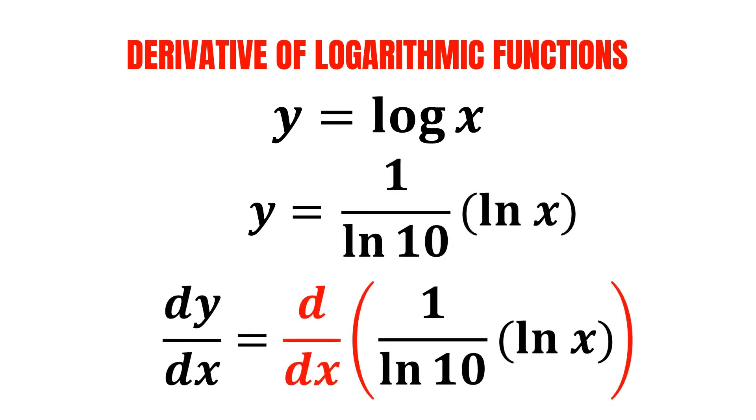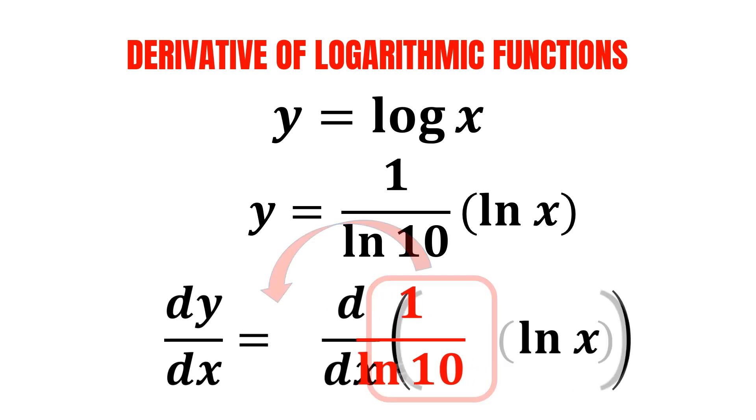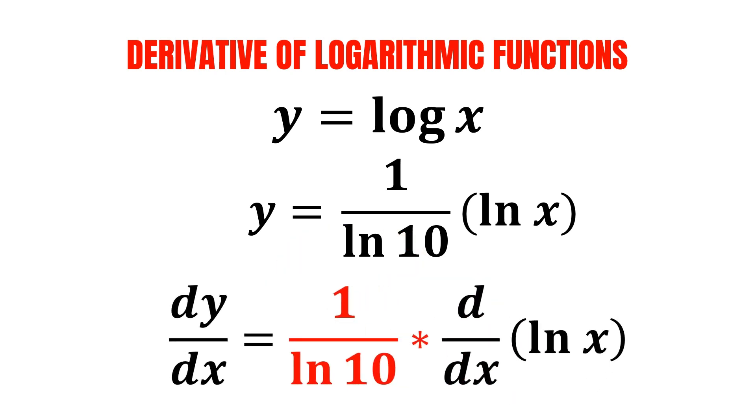We take the derivative with respect to x, and you'll notice that 1 over natural log of 10 is actually a constant without any variables, so we can bring it outside of the derivative. And we end up with 1 over natural log of 10 multiplied by the derivative of ln x.